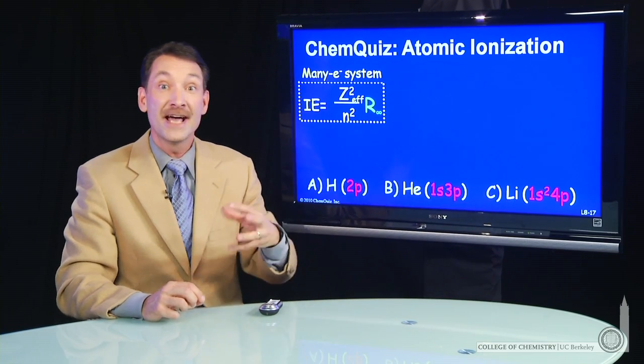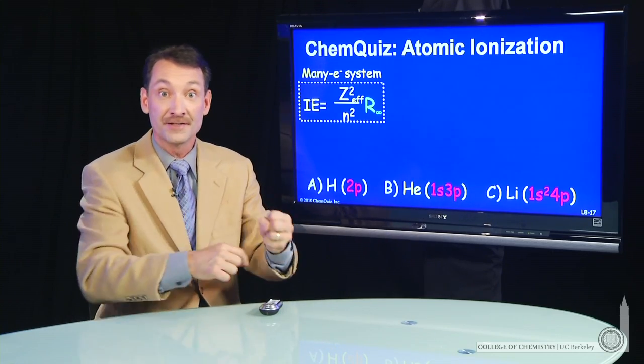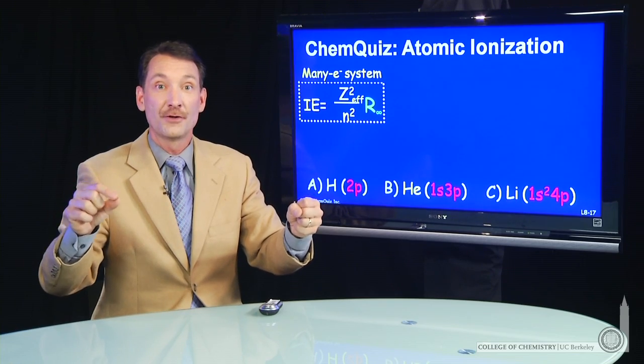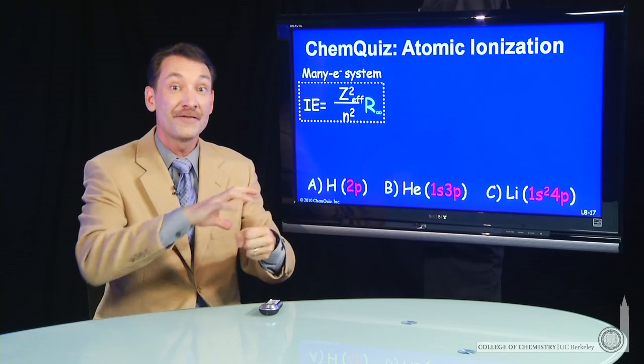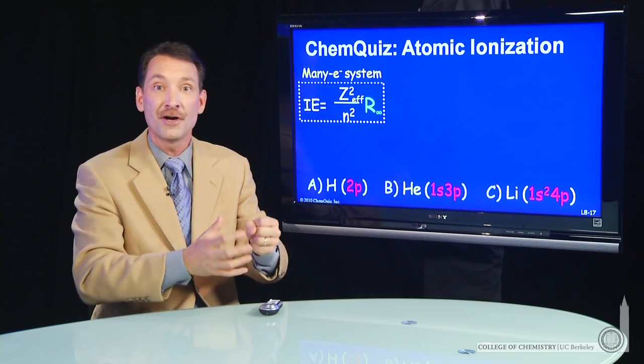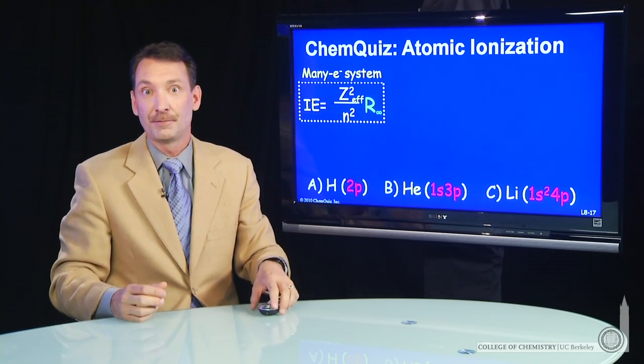Same thing for the lithium. It has three protons in its nucleus, but it has two s electrons shielding that 4p electron. So those two s electrons do a very effective job of shielding nearly two full positive charges. So the outer 4p sees like one positive charge.